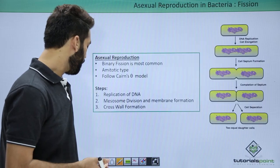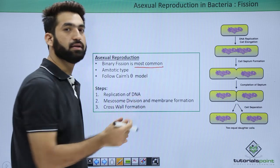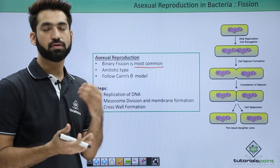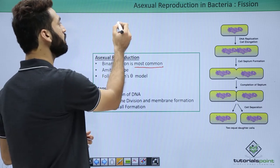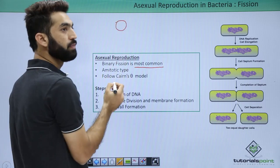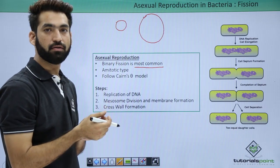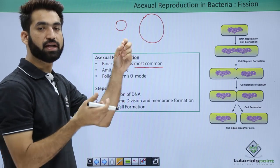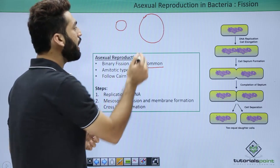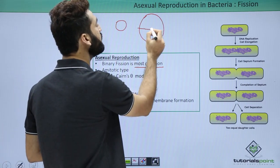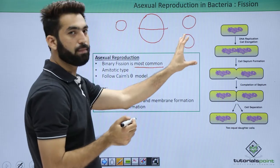Fission is the most common method in bacterial reproduction. What happens is one particular bacteria grows in size — the cytoplasmic content increases due to DNA duplication and cytoplasmic content duplication — and then the cytoplasm equally divides into two, giving you two bacteria.